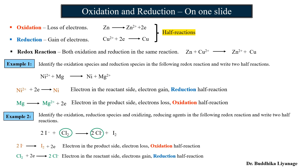Now, what are the oxidizing agent and reducing agent? If something undergoes oxidation, it acts as the reducing agent, and the species that undergoes reduction acts as the oxidizing agent. So here, I⁻ is the reducing agent, and Cl₂ is the oxidizing agent.